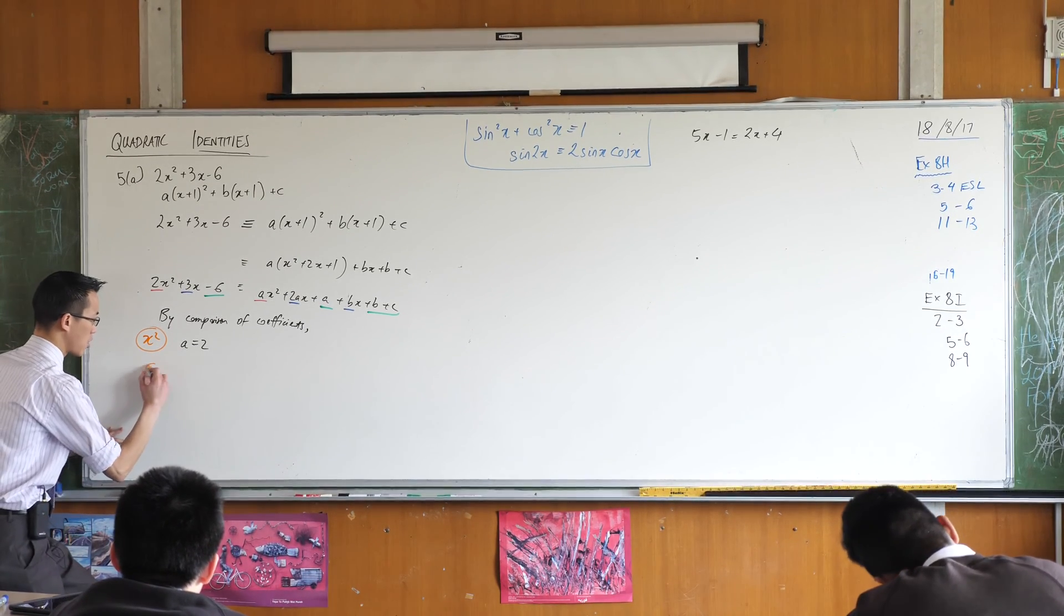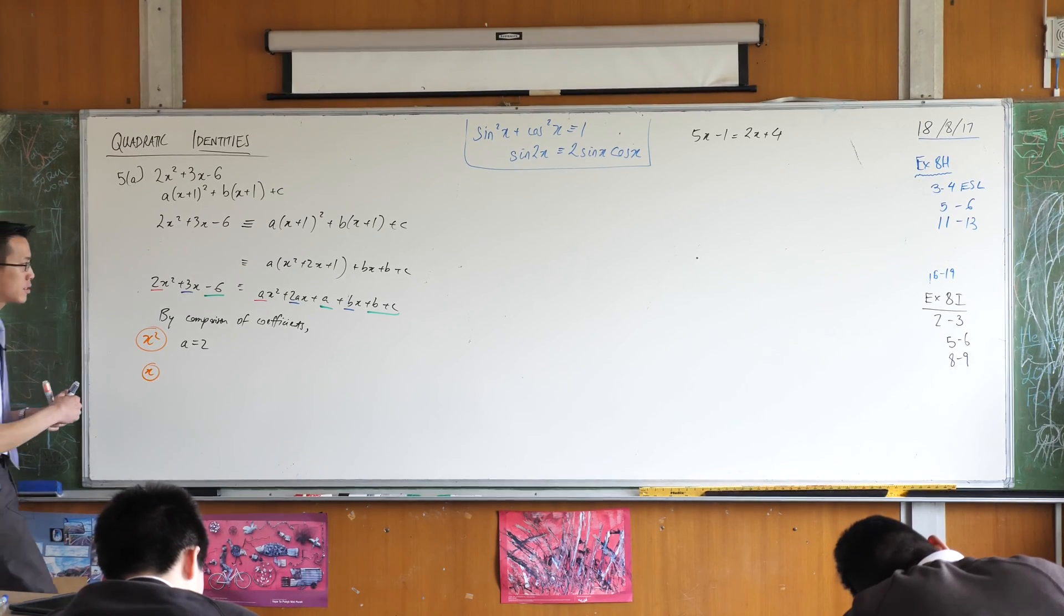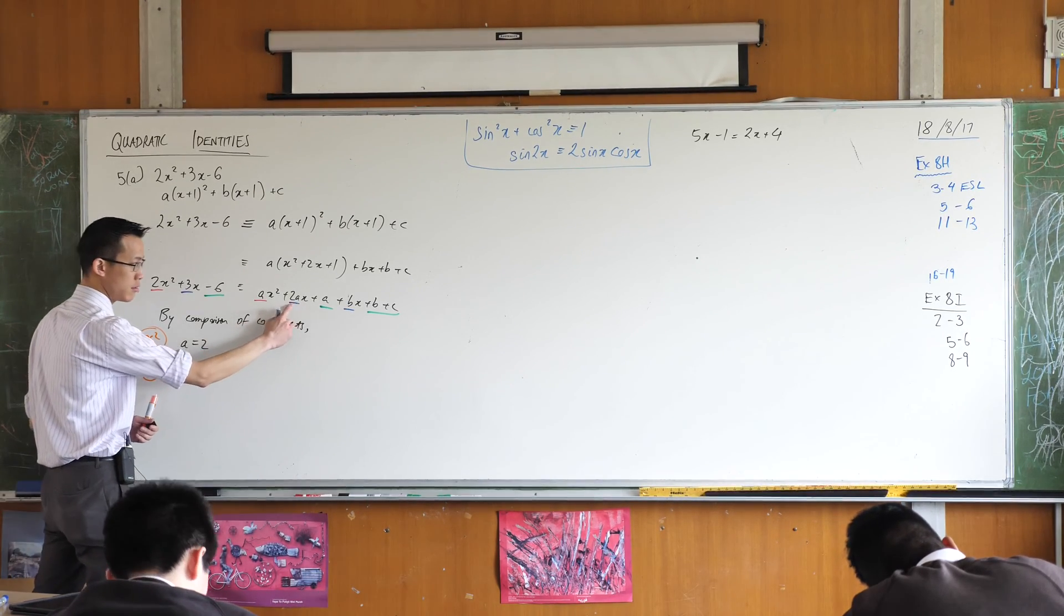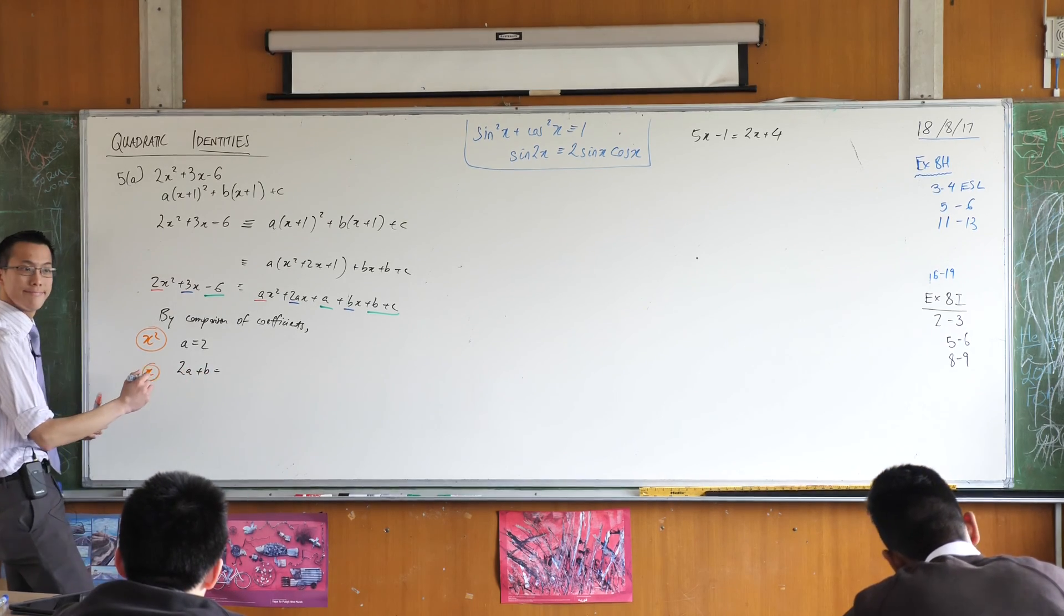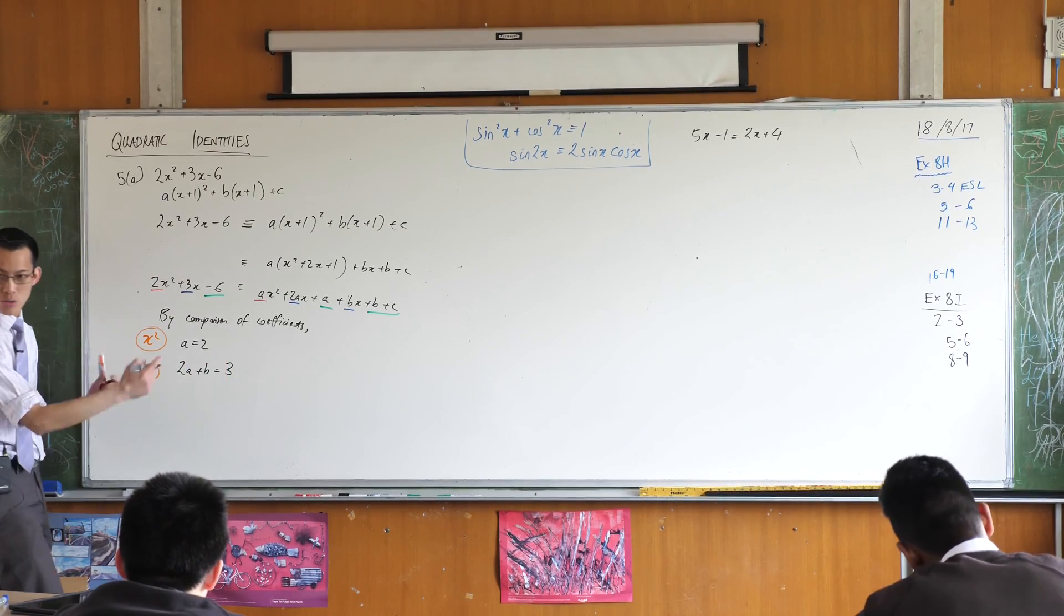What about the x coefficients? What do I write from there? I would say that 2a plus b is equal to 3. But I already, I just worked out what a was.